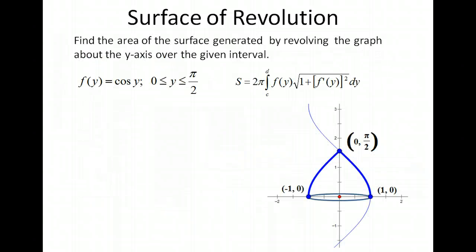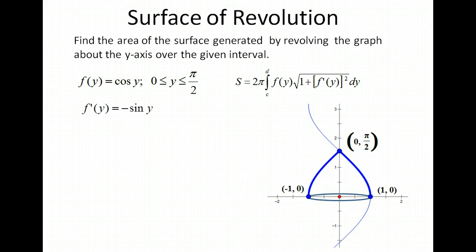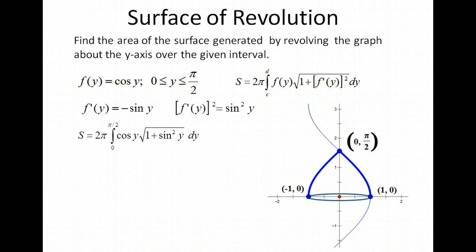Let's try another example. In this case we have our function given in terms of y, which is cosine of y — you should recognize this as the arc cosine curve, but we'll leave it as cosine y to make integration easier. We have our f of y, and we need to find f prime of y and square it. So f prime of y squared is sine squared y. Let's substitute into our surface area formula: we have cosine of y times the square root of 1 plus sine squared y, dy.